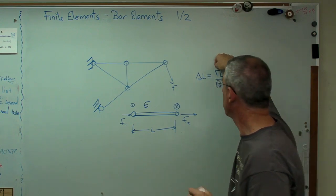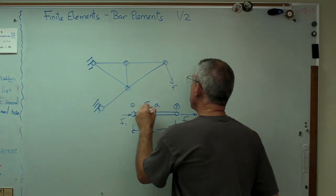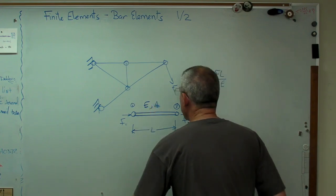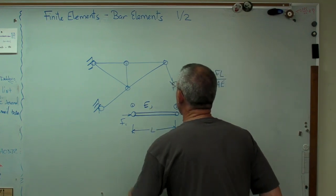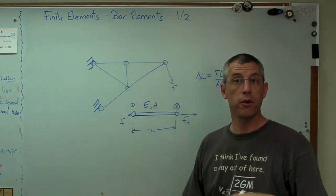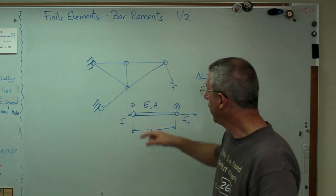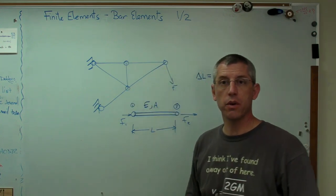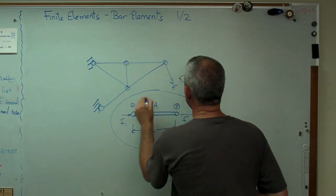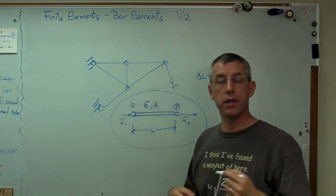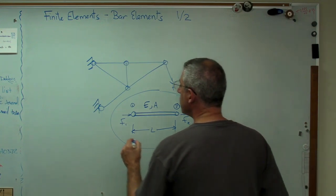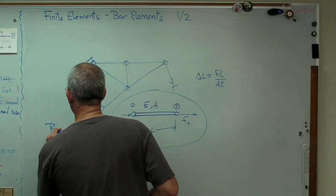If I know E and A for every truss element, in theory I ought to be able to analyze what's going on here. This thing right here is the physical building block of that truss. There's also a mathematical building block called a finite element, and this is going to be called a bar element.